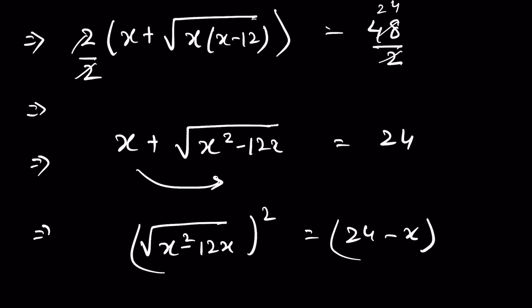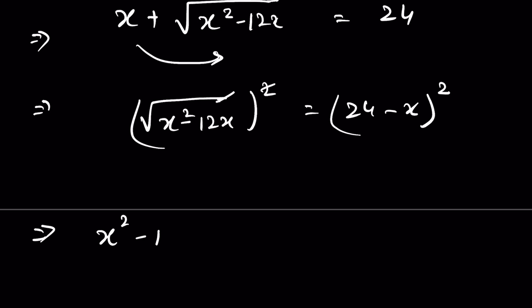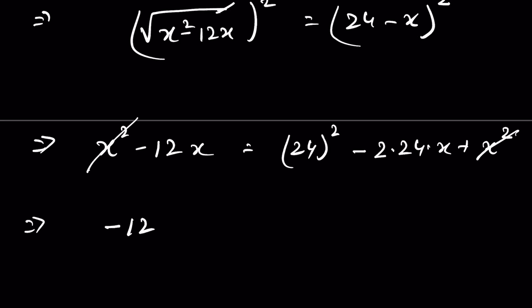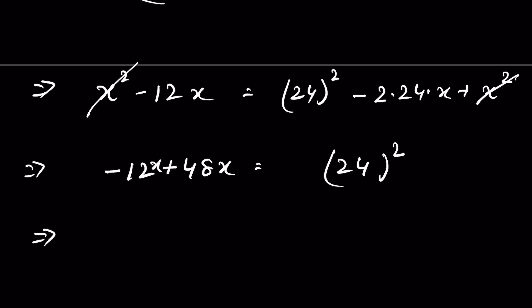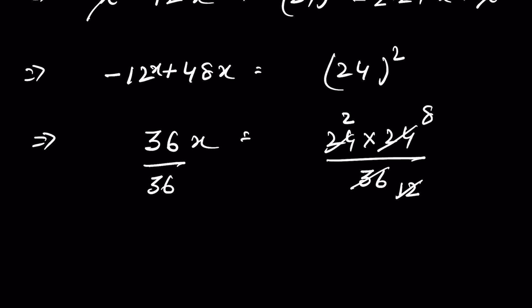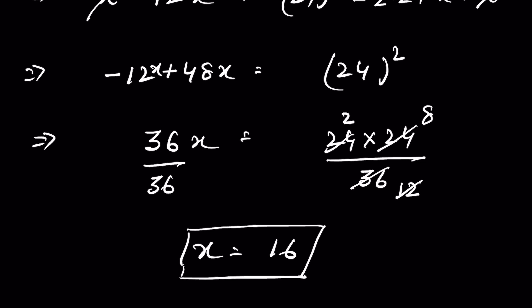Removing x squared from both sides: minus 12x equals 576 minus 48x. Rearranging: 48x minus 12x equals 576, so 36x equals 576. Dividing both sides by 36: x equals 16. Both methods give x equals 16. This second method is a lengthier process. Which process did you like more? Let me know in the comment section. Thanks for watching.